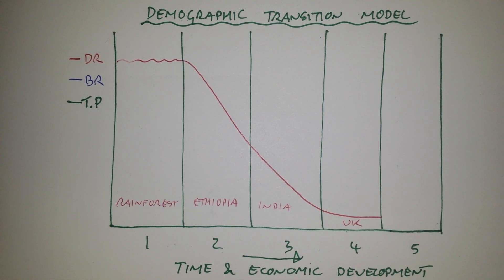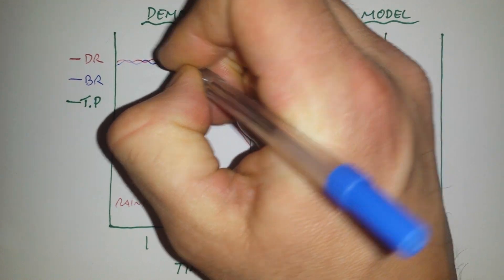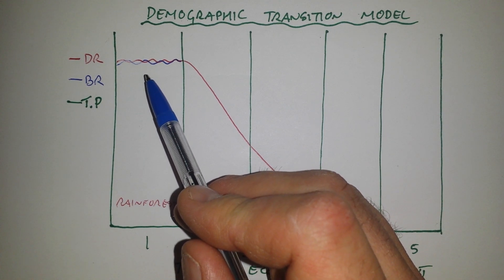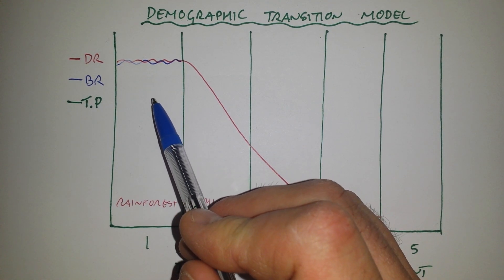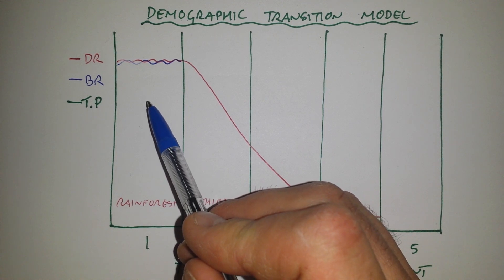So the second line that we need to draw on here is for birth rate. And in stage one, the birth rate is also high. This is because of several factors. Firstly, there is a lack of access to contraception and family planning. So people don't have control over how many children they have.